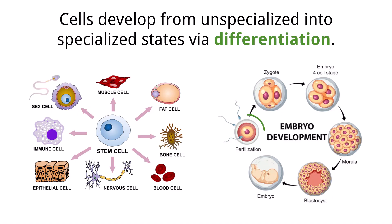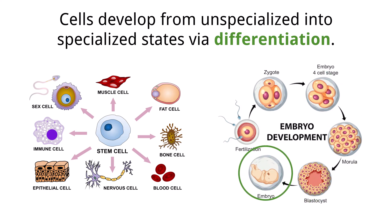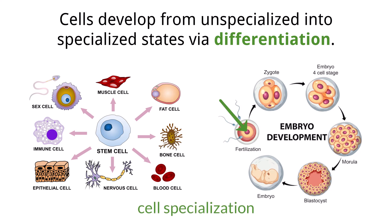We all started off being only one cell large after fertilization occurred by the egg and sperm from our parents. But now, watching this video, we are made out of a combination of trillions of cells that are different and have different roles and functions. We can describe this change in development of our cells through the lens of specialization. The single cell we started off as was unspecialized, and the many cells that make us up today are specialized.